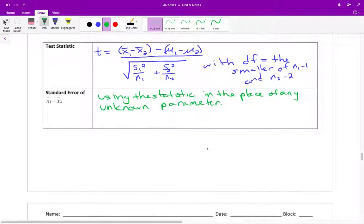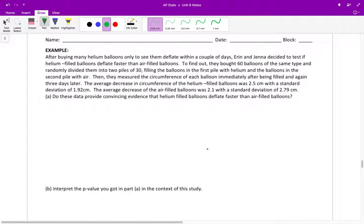So let's look at an example and that'll be it for today. In this example, after buying many helium balloons only to see them deflate within a couple of days, Aaron and Jenna decided to test if helium filled balloons deflate faster than air filled balloons. To find out, they bought 60 balloons of the same type and randomly divided them into two piles of 30, filling the balloons in the first pile with helium and the balloons in the second pile with air. Then they measured the circumference of each balloon immediately after being filled and again three days later. The average decrease in circumference of the helium filled balloons was 2.5 centimeters with standard deviation 1.92 centimeters. Average decrease of the air filled balloons was 2.1 centimeters with a standard deviation of 2.79 centimeters. Do these data provide convincing evidence that helium filled balloons deflate faster than air filled balloons?